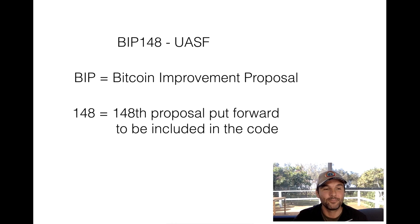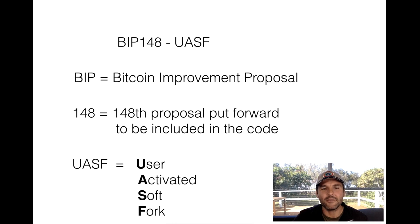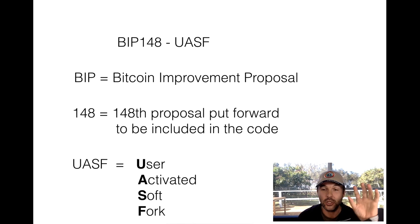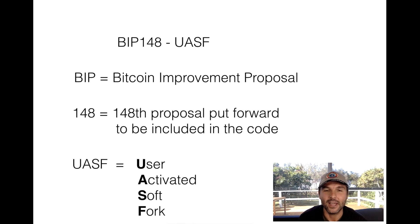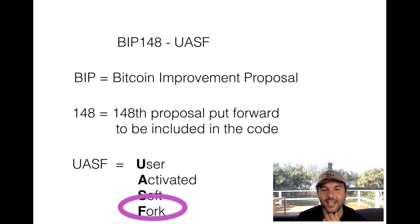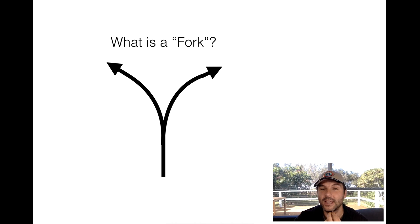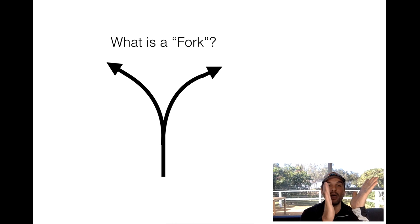UASF stands for User Activated Soft Fork. User activated is one side of things and a soft fork is another. Let's have a look at what a soft fork is. But to start, let's look at what a fork actually is. Those who have been around in Bitcoin for a while will be pretty familiar with this, but really all a fork is — it's just like a fork in the road. Everyone's going one way and then you've got a choice to either go that way or another way.